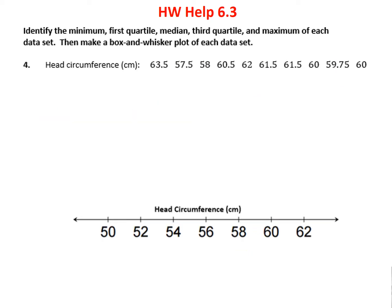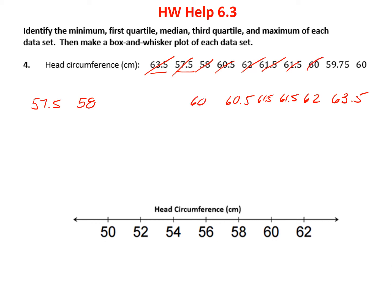Again, find the minimum, first quartile, median, third quartile, and maximum, and then make a box and whisker plot. My smallest number looks like 57.5, and my largest number is 63.5. Then we start filling in: 58, 60.5, 62, 61.5 twice, 60, 59.75, and another 60.